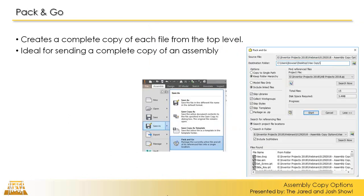The first one is Pack and Go. A vast majority of you at least know about this one and have used it. This one's nice because it's going to create a complete copy of each of your files. One of the drawbacks is that it's going to use the same names. I typically use this one for sending a copy of your assembly to an outside party. Starting with the top-level drawing, it picks up all assemblies, sub-assemblies, and parts. A drawback is that it does not bring along linked drawings — if you have a sub-assembly with a drawing, it's not going to bring that along.